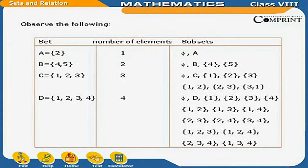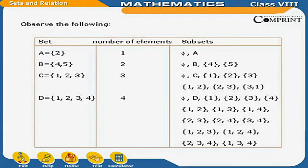Observe the following table showing sets, their number of elements, and their subsets. If A = {2}, number of elements is 1 and subsets are {∅, A}. If B = {4, 5}, number of elements is 2 and subsets are {∅, {4}, {5}, B}. If C = {1, 2, 3}, number of elements is 3 and subsets include ∅, {1}, {2}, {3}, {1,2}, {2,3}, {3,1}, and C. If D = {1, 2, 3, 4}, number of elements is 4 and subsets include all single, pair, triple, and the full set.